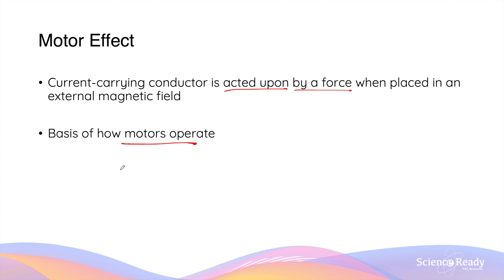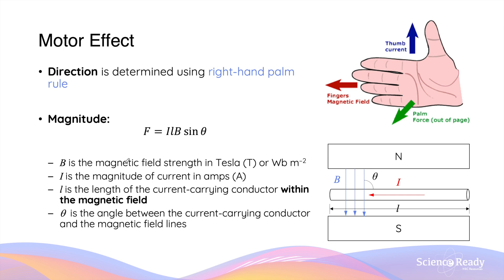We cover how motors function in its own video. When learning about the Motor Effect, we can break it down into the direction and magnitude of the force acting on the current-carrying conductor inside the magnetic field. The direction can be determined using the right-hand palm rule — the same rule used for charged particles moving inside a magnetic field. The subtle difference here is that the thumb will be pointing in the direction of the conventional current. Our four fingers will go in the direction of the magnetic field, and the palm will then be facing the direction of the force acting on the current-carrying conductor.